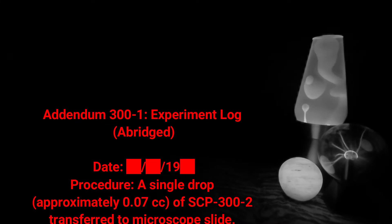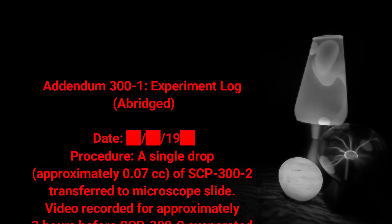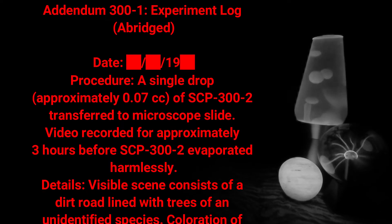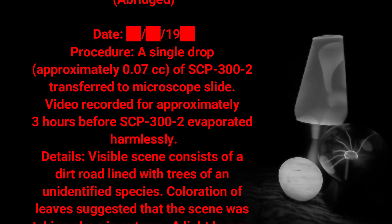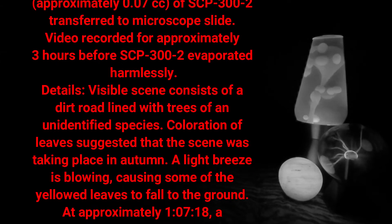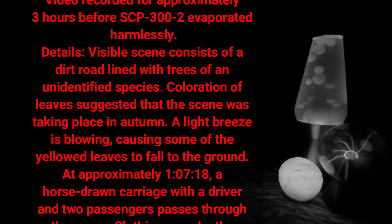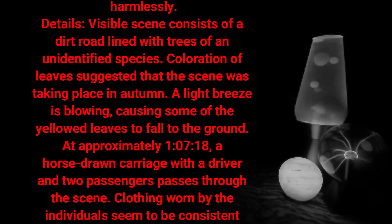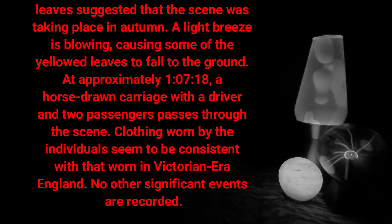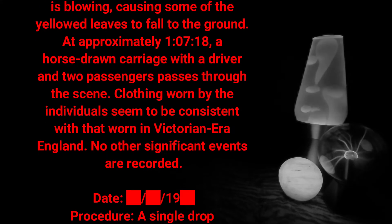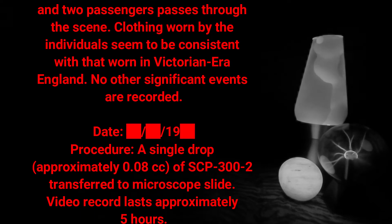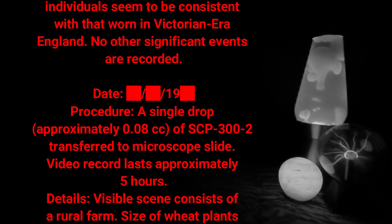Experiment Log — Procedure: A single drop, approximately 0.07 cc of SCP-300-2, transferred to microscope slide. Video recorded for approximately three hours before SCP-300-2 evaporated harmlessly. Details: The visible scene consists of a dirt road lined with trees of an unidentified species; coloration of leaves suggested the scene was taking place in autumn. A light breeze is blowing, causing yellowed leaves to fall. At approximately one hour, seven minutes, and eighteen seconds, a horse-drawn carriage with a driver and two passengers passes through the scene. Clothing worn is consistent with Victorian-era England.